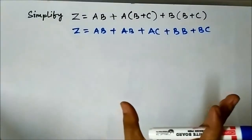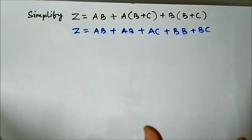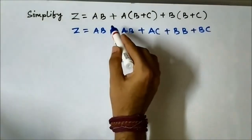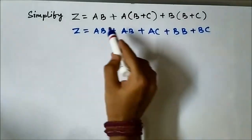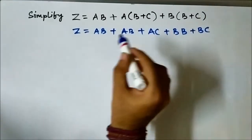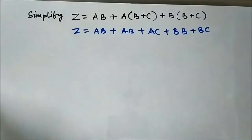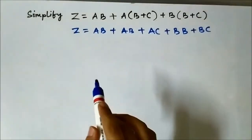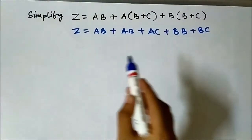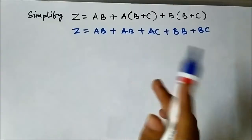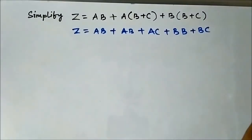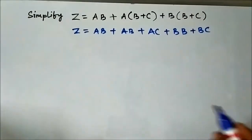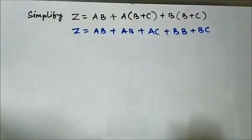Just to remind you: where we use the plus sign it means OR operation, and where multiplication comes up it means the AND operation. Plus here denotes OR operation; multiplication or product here denotes the AND operation, because this is digital electronics Boolean algebra.